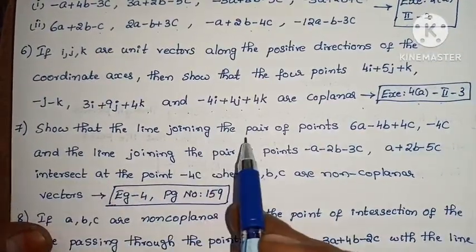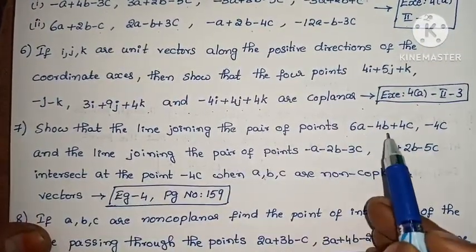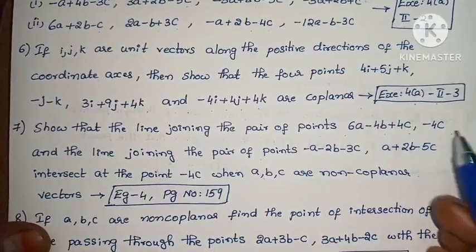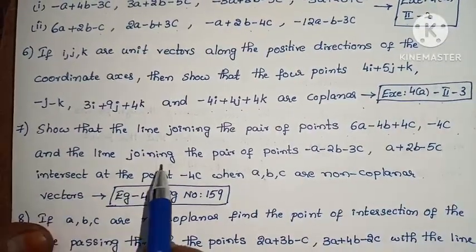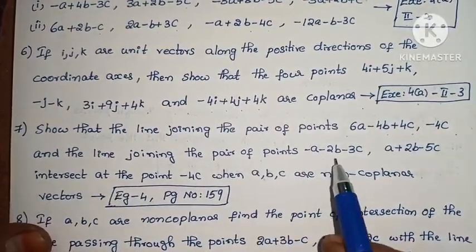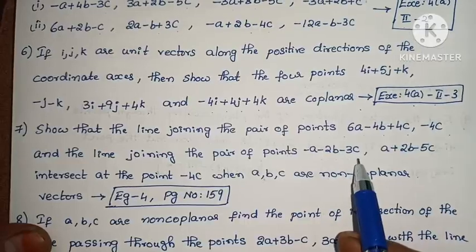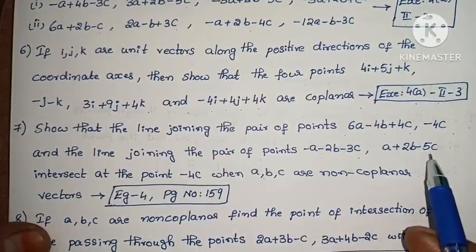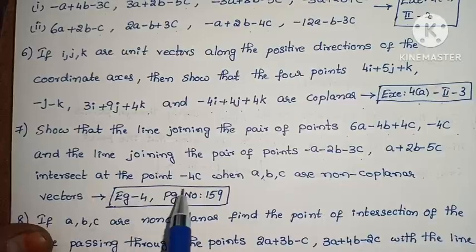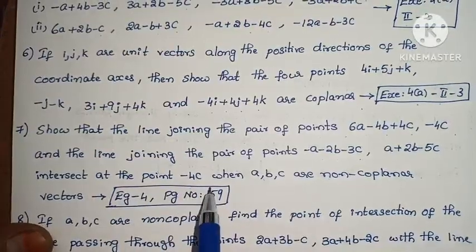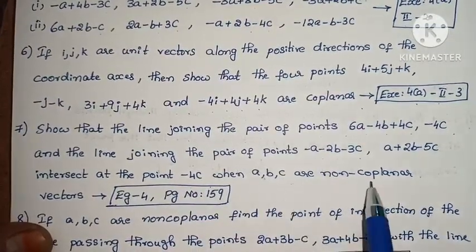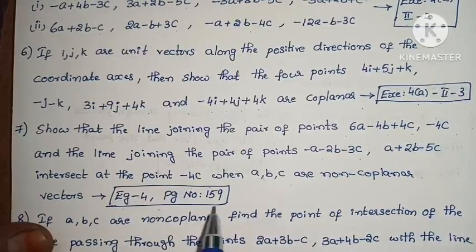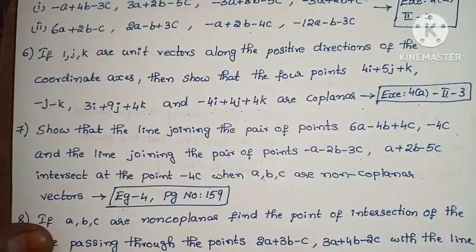Next: Show that the line joining the pair of points 6A minus 4B + 4C, minus 4C, and the line joining the pair of points minus A minus 2B minus 3C, A + 2B minus 5C, intersect at the point minus 4C, where A, B, C are non-coplanar vectors. Example 4, page number 159.